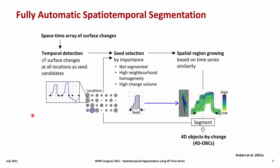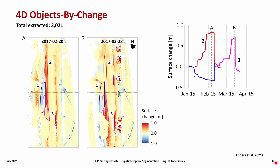In this automatic workflow, seed detection is first run at all locations in the scene, then the seed list is sorted and region growing of segments regarding time series similarity starts. The segmentation continues until no more seed candidates are available that have not already been segmented into a previous object. For the 3D time series of the sandy beach, more than 2,040 objects by change were extracted.